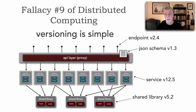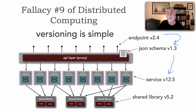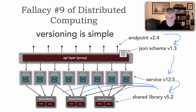Just in this picture alone, we can start to gain an appreciation for some of the complexity that exists with trying to manage different versions. For example, endpoint 4 talks to schemas 1, 2, and 3. Schemas 1, 2, and 3 talk to services 12.5, 12.4, 12.3, and 12.2. All of those use different shared library versions as well — it could use multiple shared libraries. You can start to see it gets mind-boggling to know what version of different artifacts that particular endpoint actually supports.